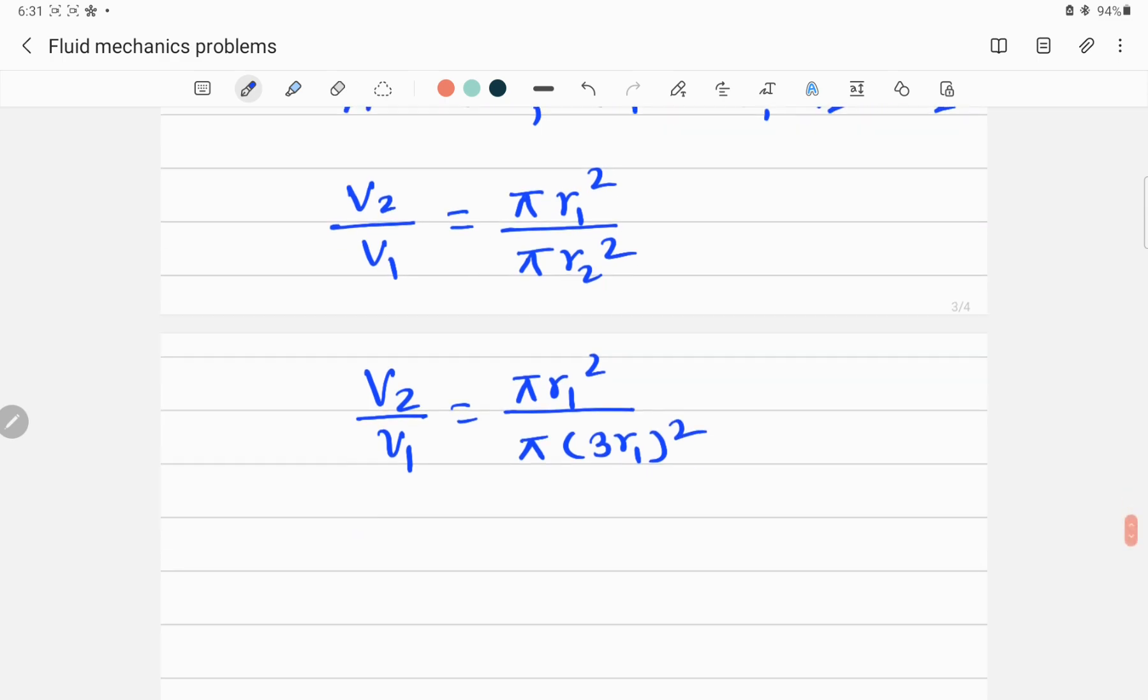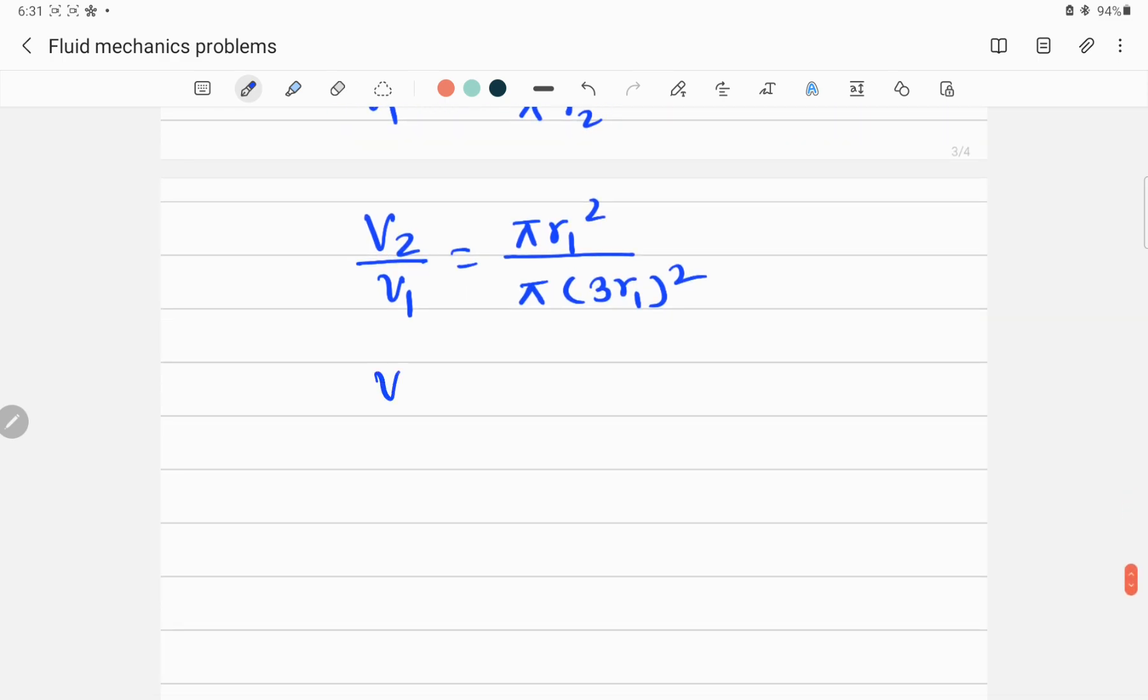We can say v2 divided by v1 is equal to—let me cancel out this π and π—this will be r1² divided by 9r1². r1² will again be canceled, and v2 divided by v1 is equal to 1/9. So this is the required ratio of the velocity.